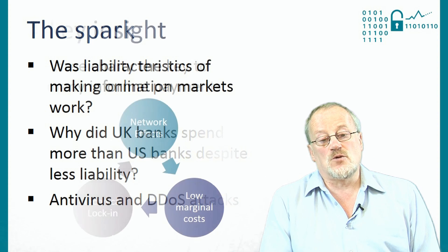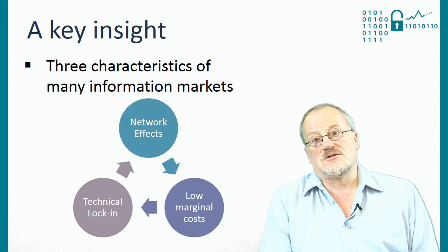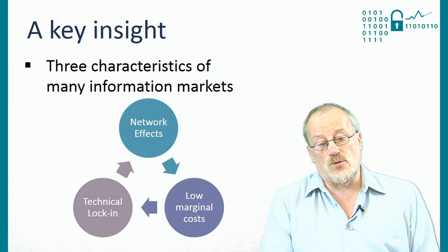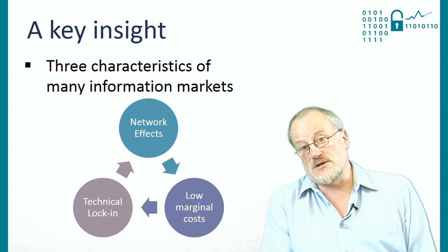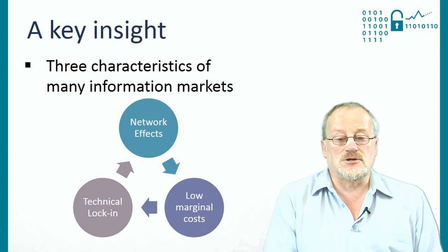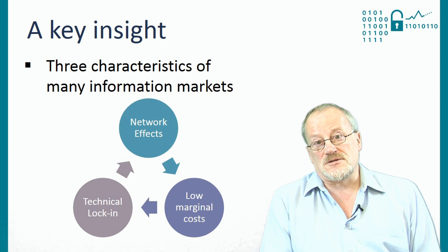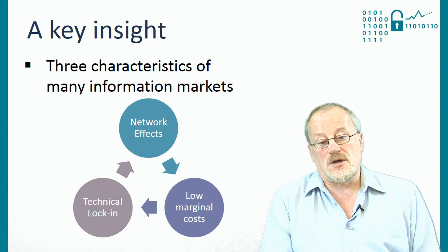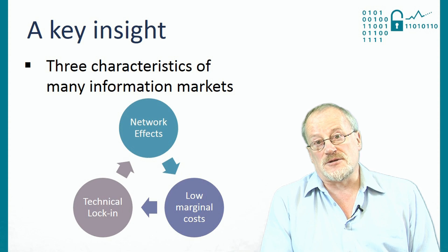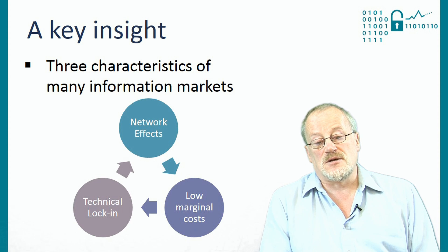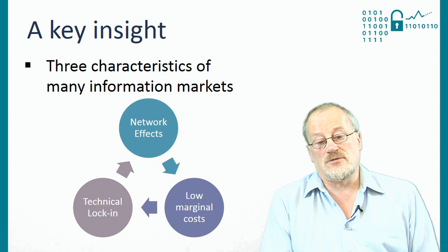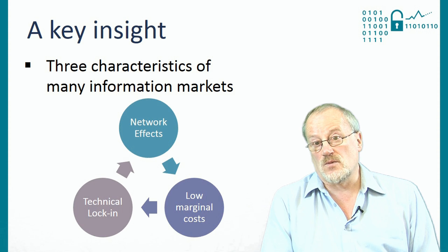The key insight that we got is that information goods and services markets are prone to monopolies. There are three reasons for this: there are network effects, there are low marginal costs, and there is technical lock-in. Where all of these are present, you tend to get monopolies, and that means you get market races for dominance of every new market and market niche that opens up. These market races and the lock-in games that people play around them really undermine information security in lots of interesting ways.